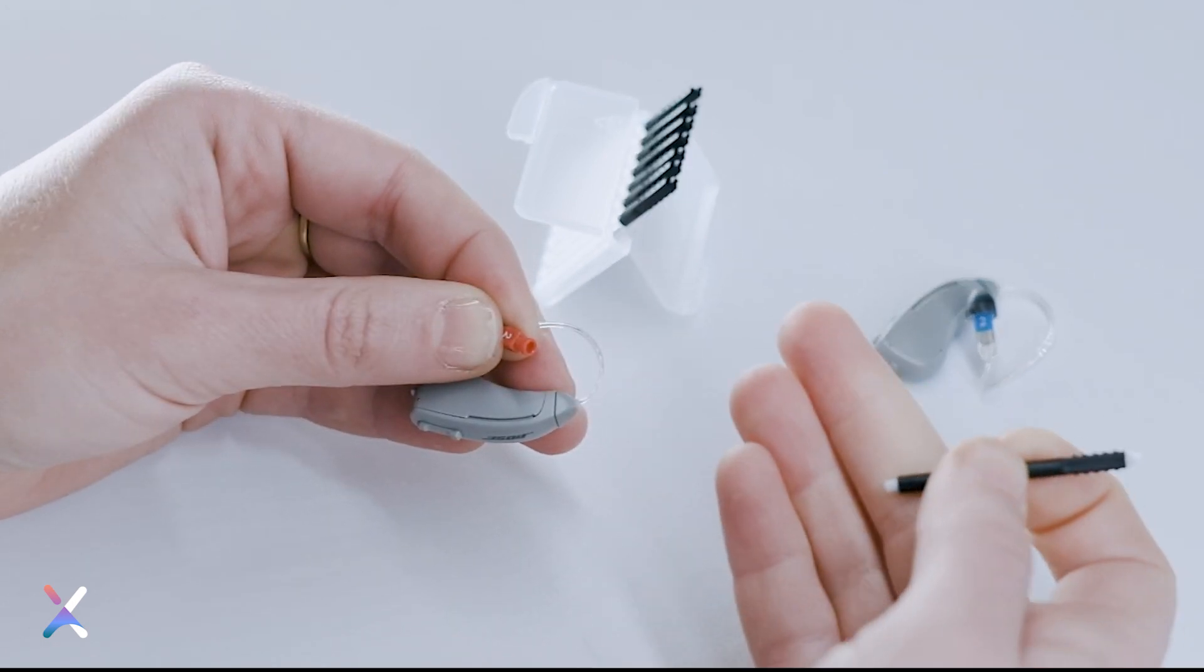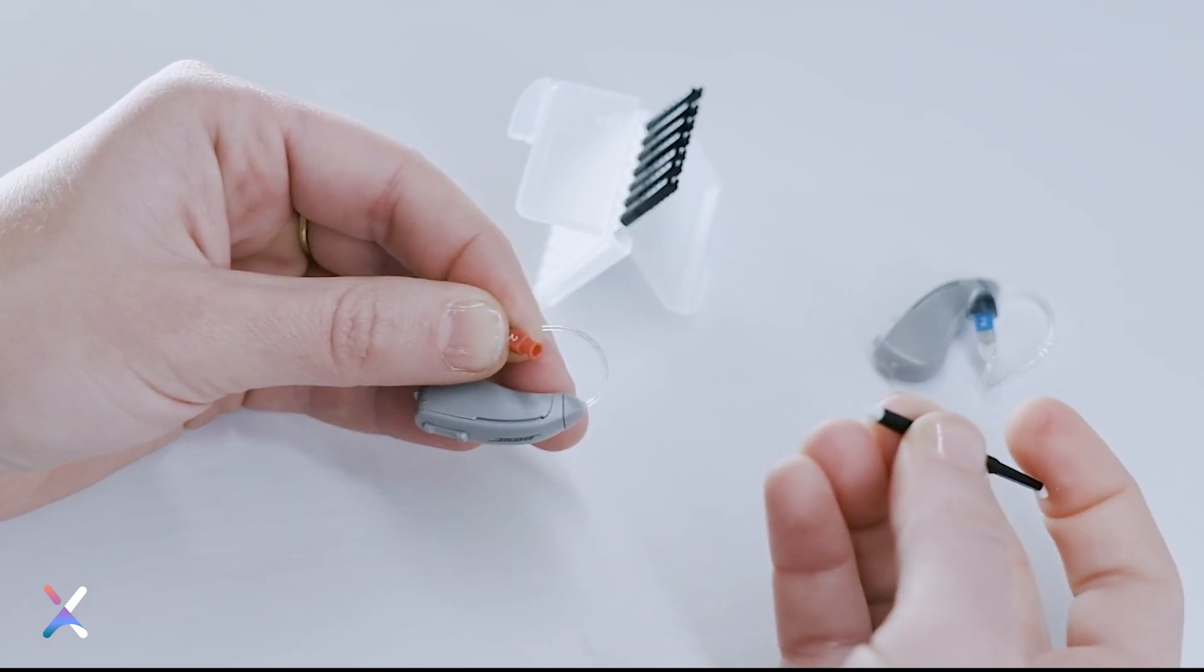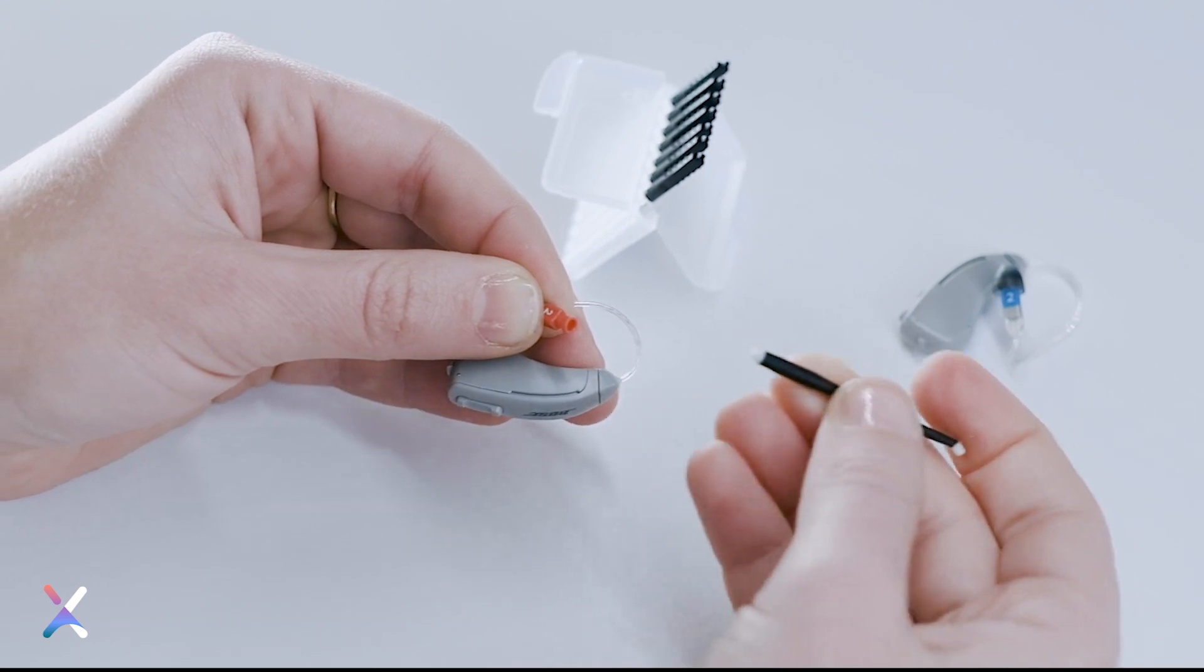Then pull back to remove it. Pick up the new wax guard and insert the larger white end of the wax guard tool into the center of the new wax guard.